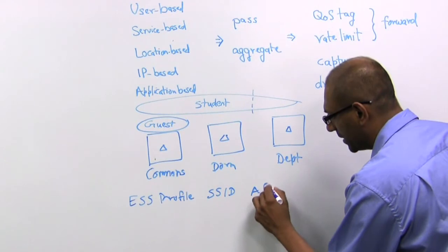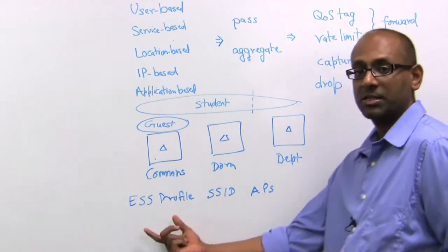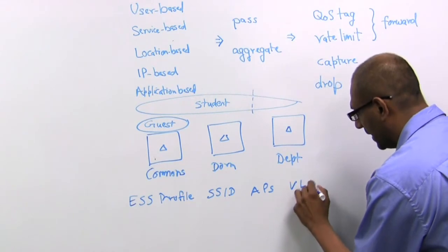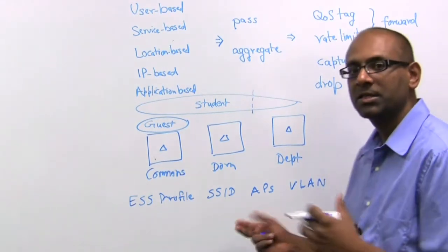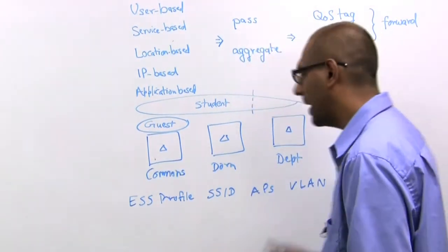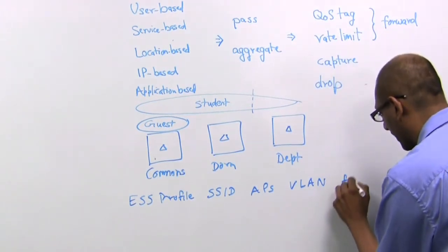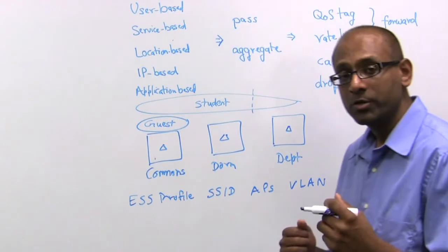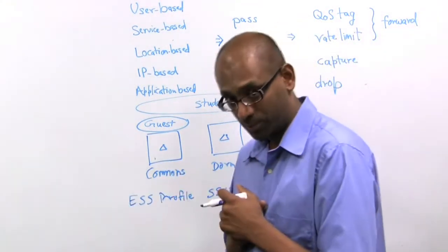The second one is the set of APs over which this ESS profile applies. The third is the VLAN to which all traffic from this ESS profile is mapped. And the last one is something that we call a filter ID that is used for policy enforcement that is applied to any user who connects to this ESS profile.